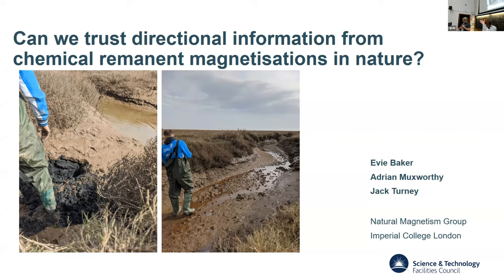Evie will tell us: can we trust direction information from CRMs in nature? It's quite a scary title, but I've never had a reason to use one like that before. I'm a PhD student at Imperial in my final year, and I'm going to be talking about chemical remanent magnetizations, specifically looking at whether they actually reliably record direction information in nature. To test this, we need to look at localities where we know we have a CRM recorded and we know that CRM has recorded a recent field, which hasn't really been done before.